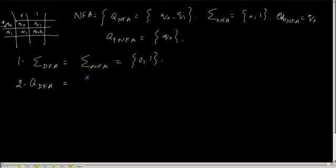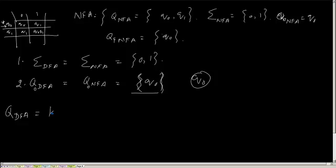Because I have to reach from that state only. That is q0. Why am I representing it like this? Because it is a set. Now what will be my qDFA? qDFA is the set of states for a DFA. That will be power set of - the method I am telling is called as subset construction method.